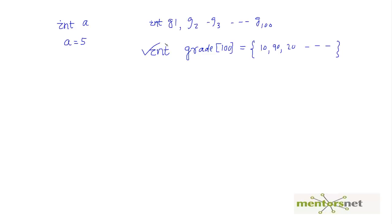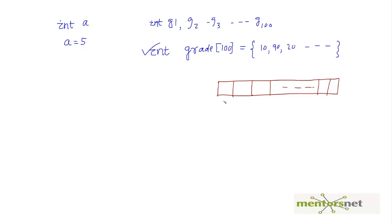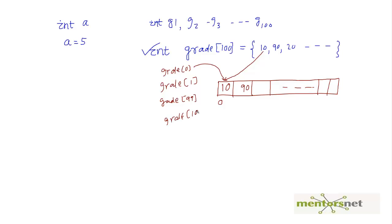If you visualize this, there is one big box with 100 elements. The first element is indexed by 0, so grade[0] holds the value 10, grade[1] holds 90, and the 100th element is accessed as grade[99]. If you try to access grade[100] you get an error because that index is not defined.